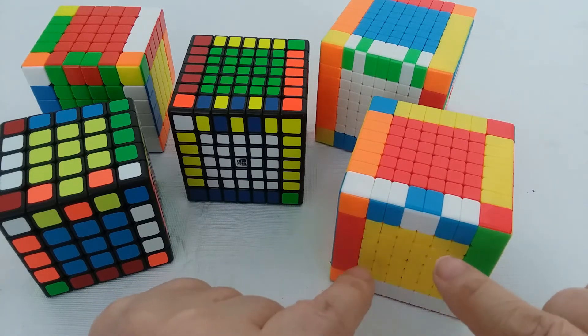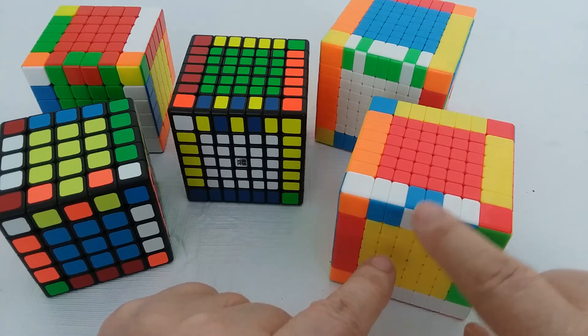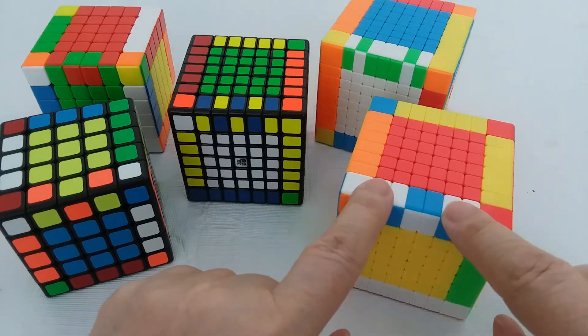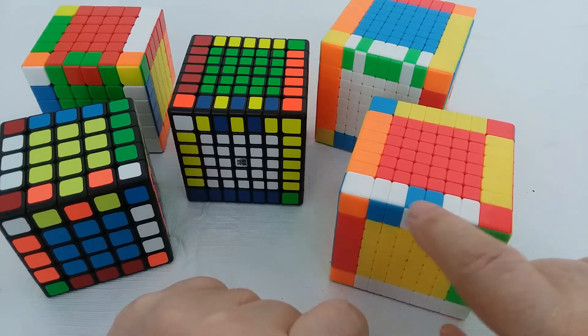Since it's an even cube, you could keep these two static and flip these, or you could keep these static and flip these. These will be easier to turn.